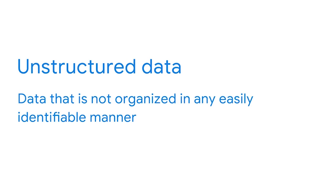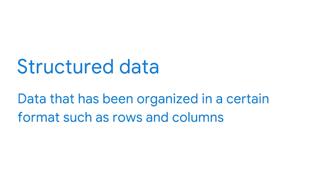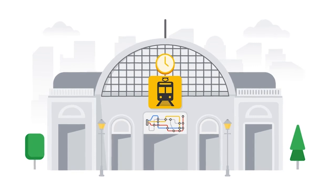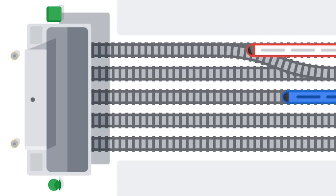When it comes to organization, there are two types of data: unstructured and structured. Unstructured data is not organized in any easily identifiable manner. Structured data has been organized in a certain format, such as rows and columns. This is where data modeling comes in. A data model is a tool for organizing data elements and how they relate to one another. These are conceptual models that help keep data consistent across a system. Think of a data model like a map of a train system — it helps you navigate the database by giving you directions through the system.